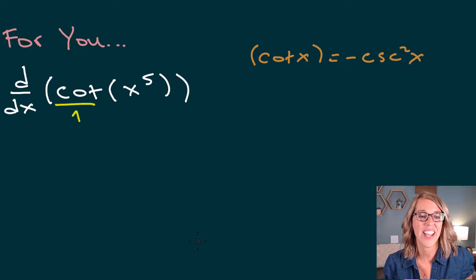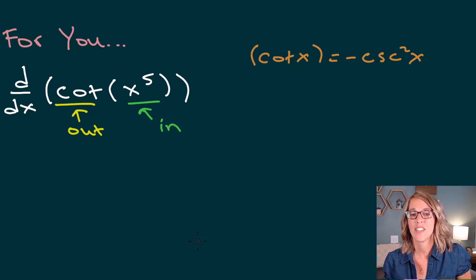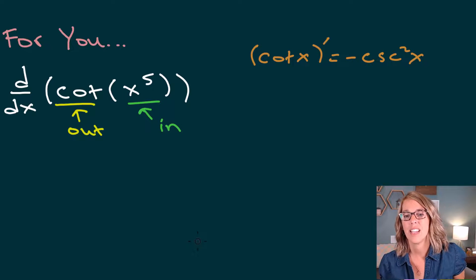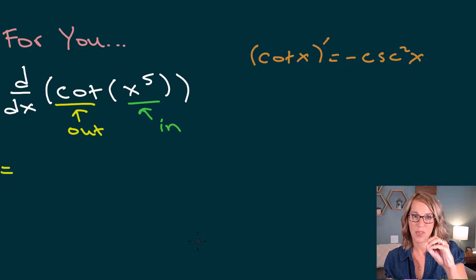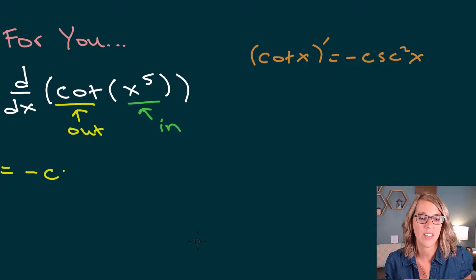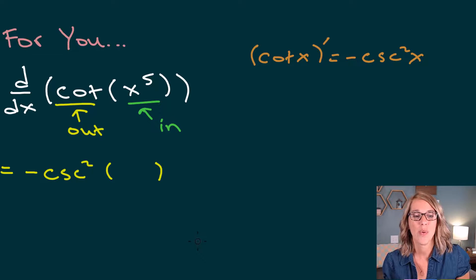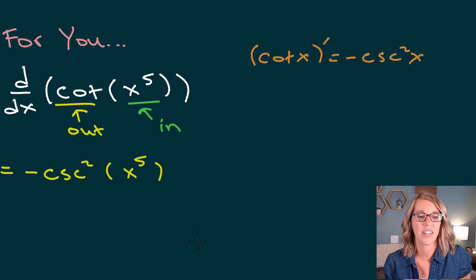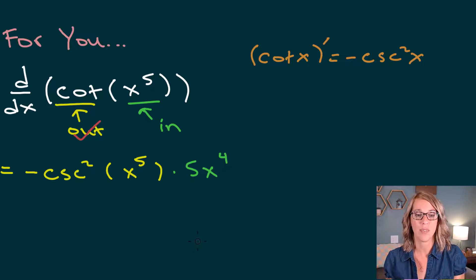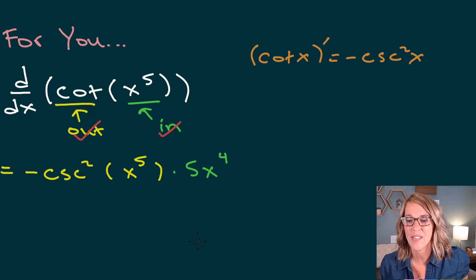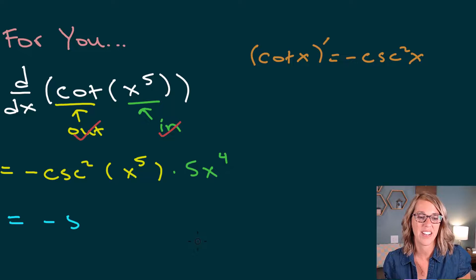Let's see how you did. Cotangent is the outer function; x to the fifth is the inner function. The derivative of cotangent is negative cosecant squared. Taking the derivative of the outer function while keeping the inner fixed: we get negative cosecant squared of x to the fifth. Outer derivative done. Now taking the derivative of the inner function — the derivative of x to the fifth is 5x to the fourth. It's best to write the monomial multiplier out in front, so the final answer is negative 5x to the fourth cosecant squared of x to the fifth.